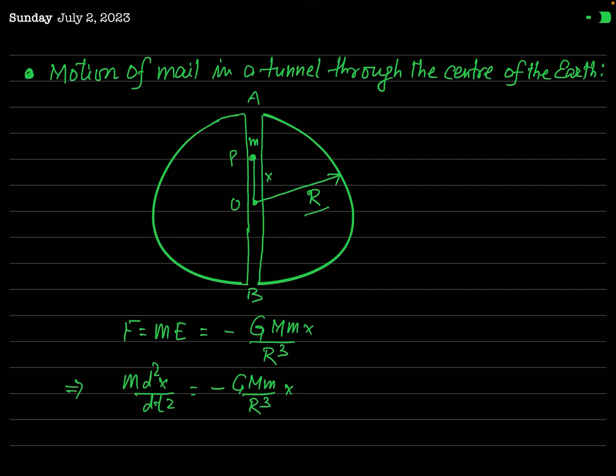Now consider a tunnel dug through the center of the earth, and a particle of mass m released from one end. This particle performs simple harmonic motion about the center of the earth. At any moment t, if the particle is at a distance x from the center of the earth, where x is less than R, the radius of the earth, we can find the force acting on it.